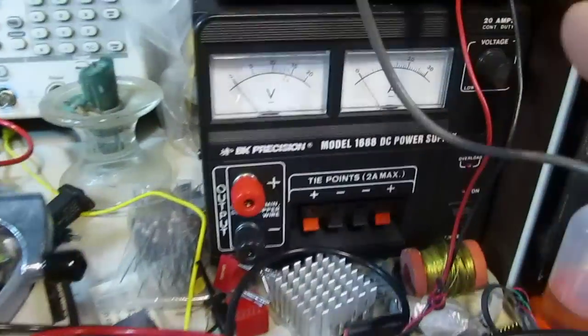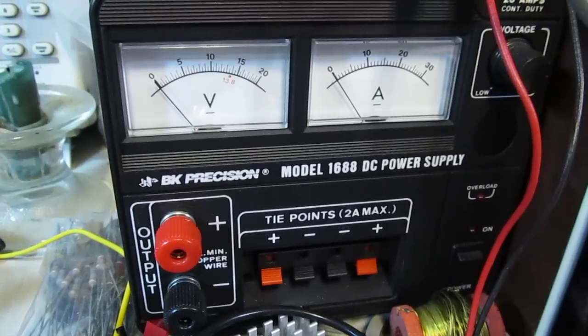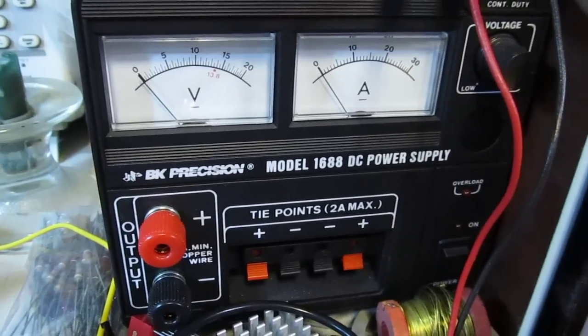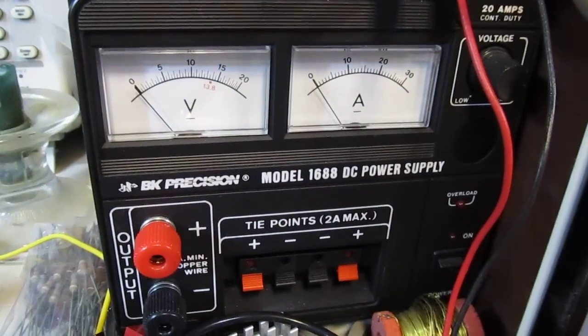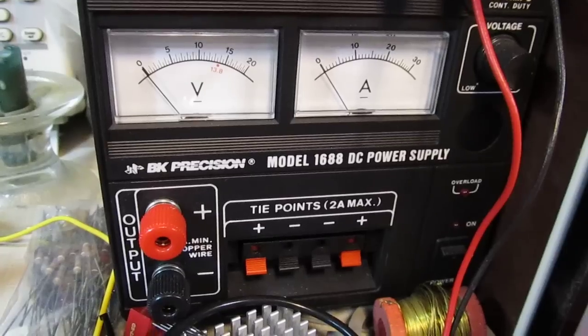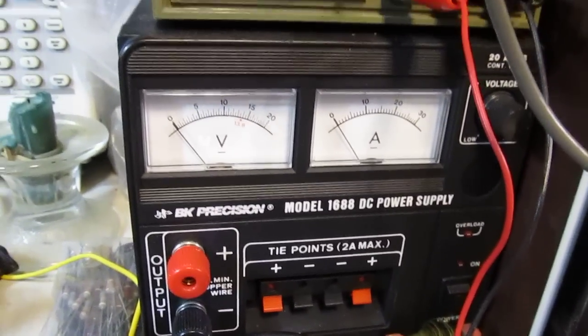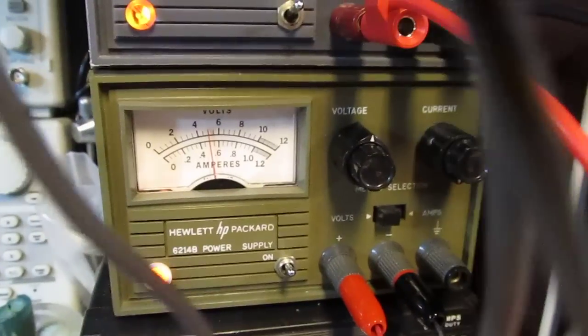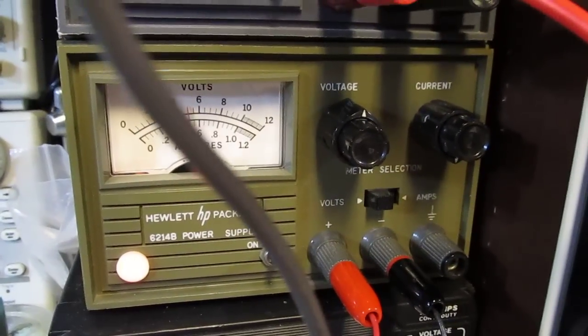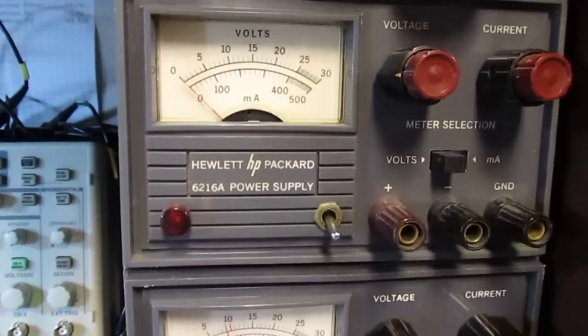Power supplies here in the bench. This little BNK is a 15 to 20 volt, close to 20, 25 amp power supply. Really good for anything working on high power. But the bulk of the time I use these little HP's. I love these little things. That's a 12 volt 1.2 amp and then a couple of 25, 30 volt 500 milliamp power supplies.